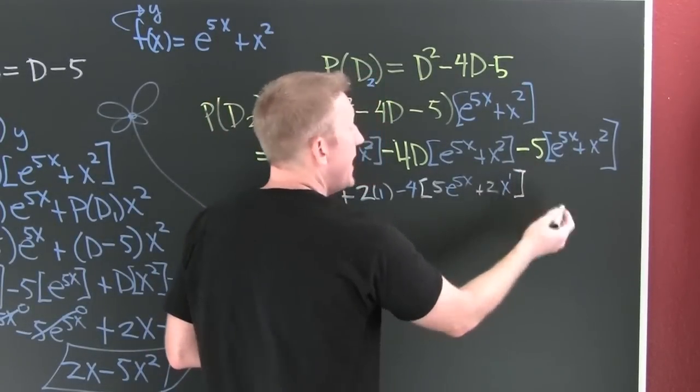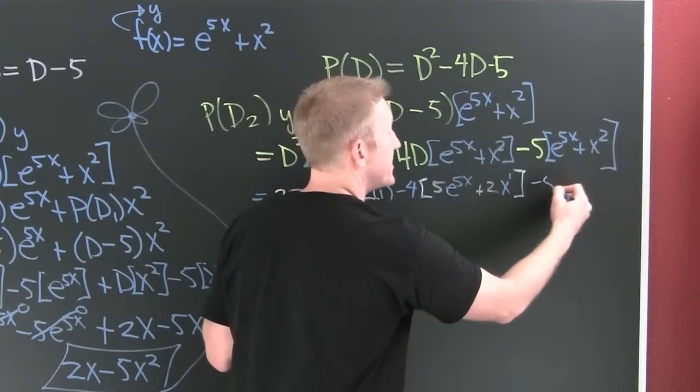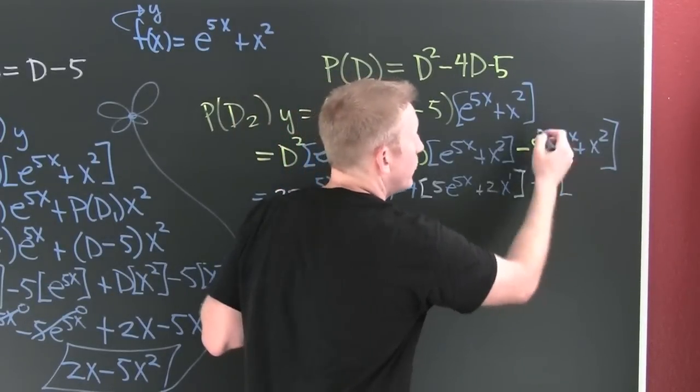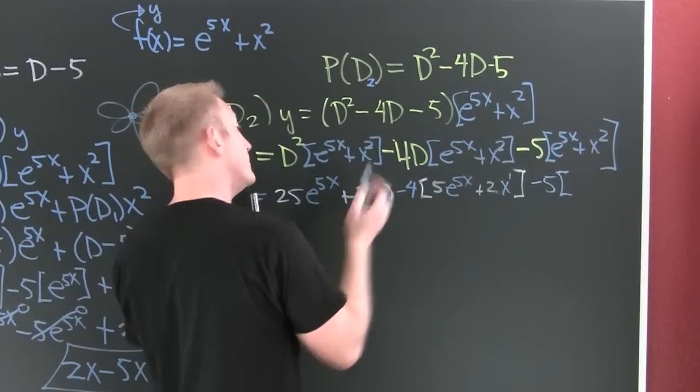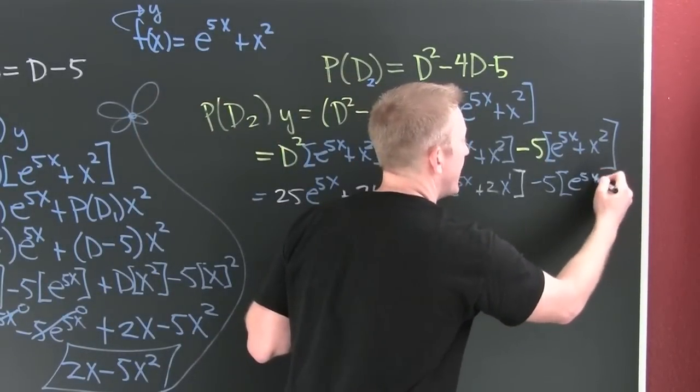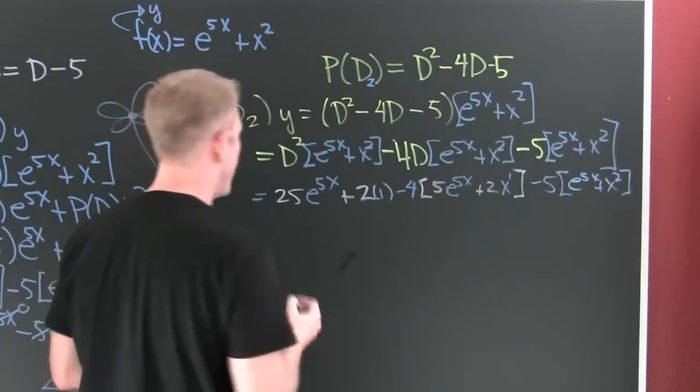And then let's just leave this alone because we're going to have a distributive step anyway. Why? Because I'm not taking any derivatives of this function. Here I took one derivative, and there I took two derivatives. Yes, e to the 5x plus x squared.